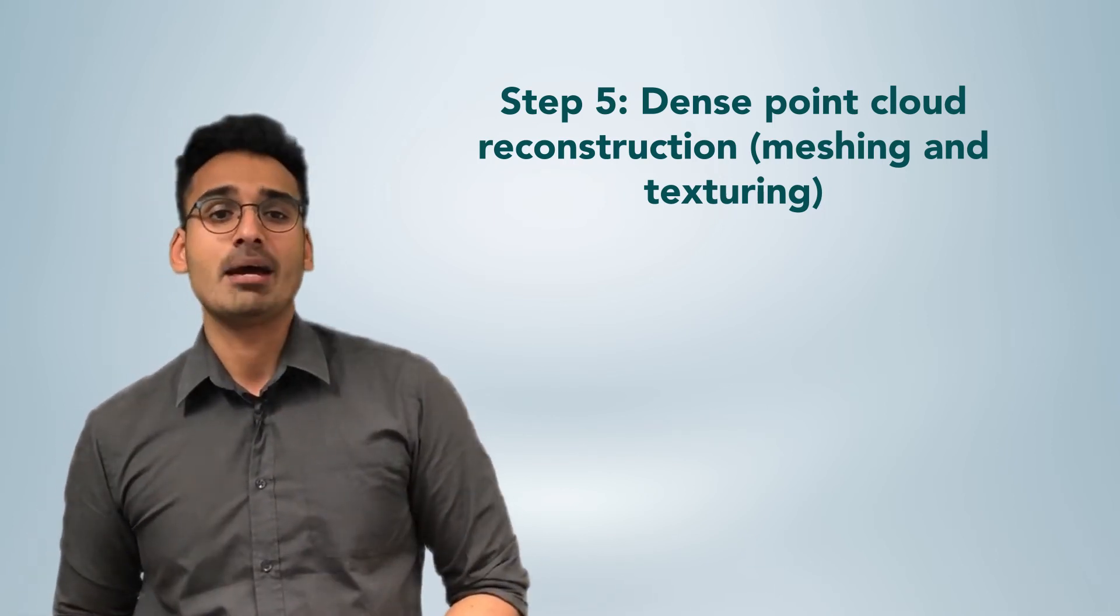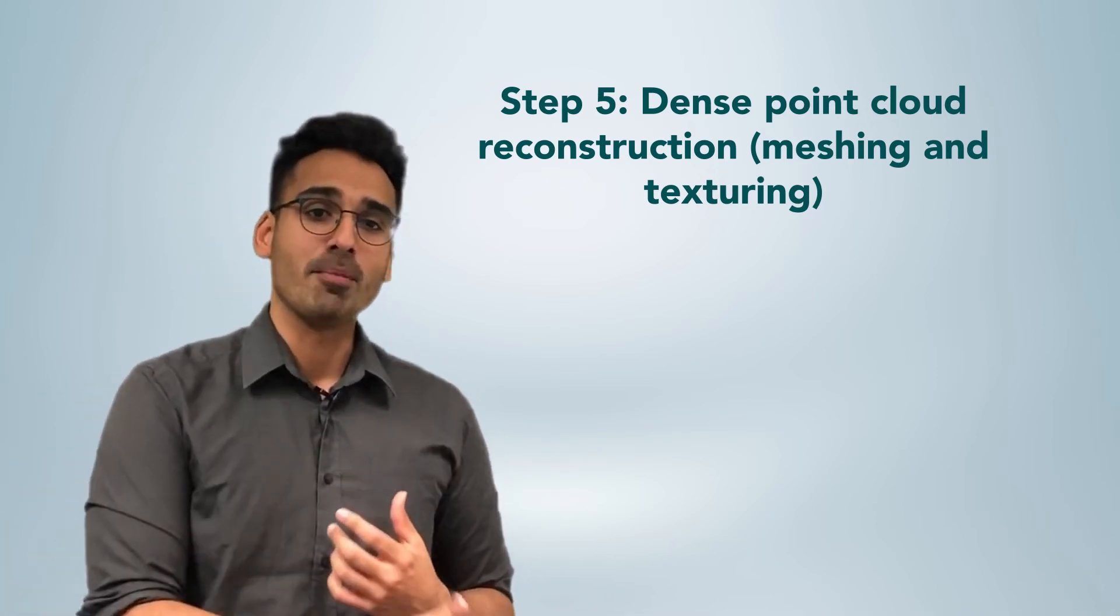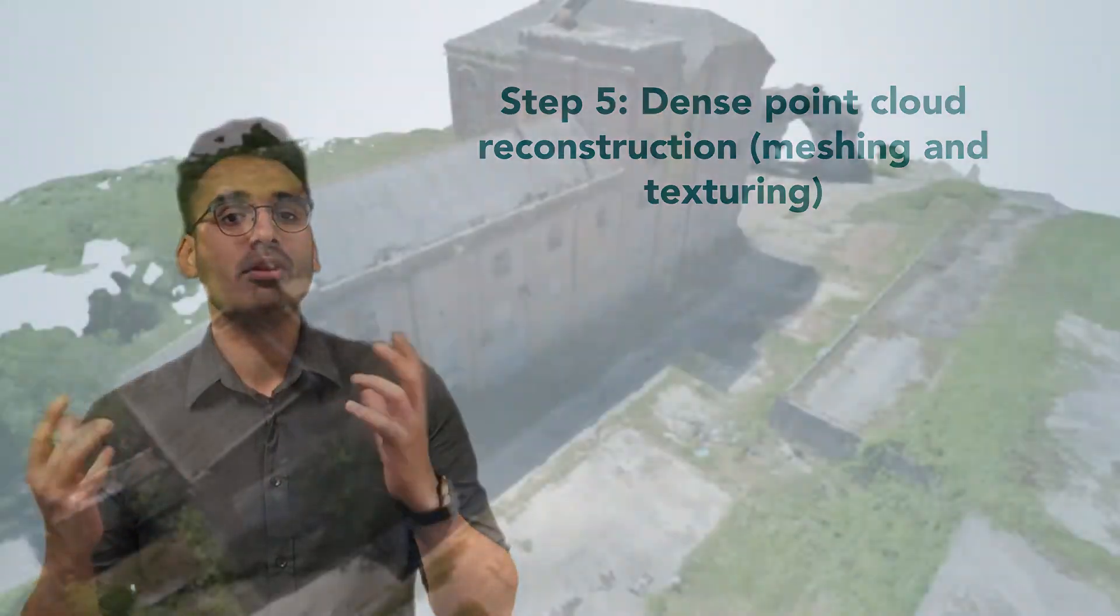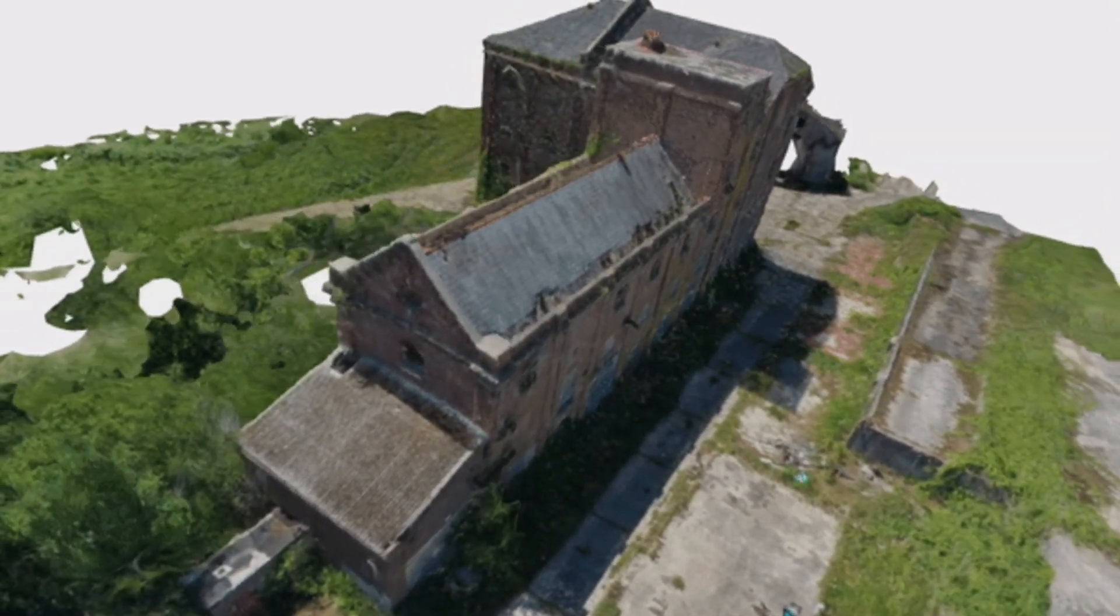You can think of this step as essentially filling in the sparse point cloud by using all the pixel information from the input images and utilizing the full resolution of the input images. The output of this step is a dense point cloud, giving us a 3D model or 2D map which is an ortho photo of the target in its full resolution with added textures.